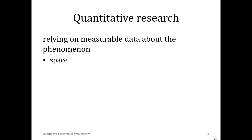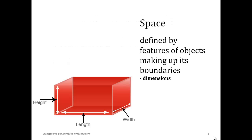What measurable parameters can we use to characterise space? In architecture, space is typically defined by features of the objects making up its boundaries, and some of these features can be measured. A first set of features you can measure are the dimensions of a space: the height, the length, and the width.